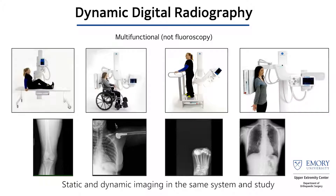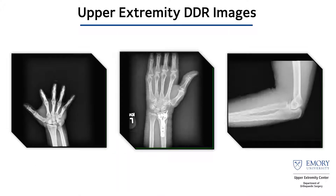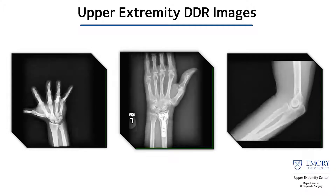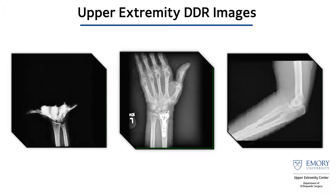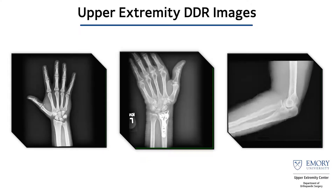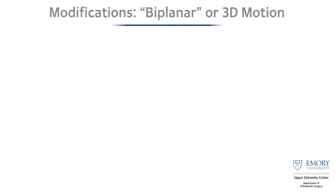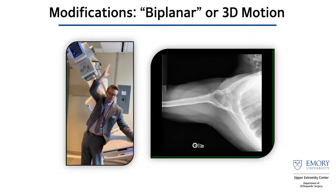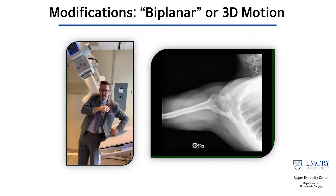You can utilize DDR in multiple different joints, but more importantly, at least from my interest, it's the upper extremity. I'm an upper extremity surgeon — I operate from the shoulder to the fingertip, specializing in complex pathologies. Dynamic DDR has really helped us reevaluate a lot of these pathologies. One of the more interesting aspects we've worked on has been the shoulder.